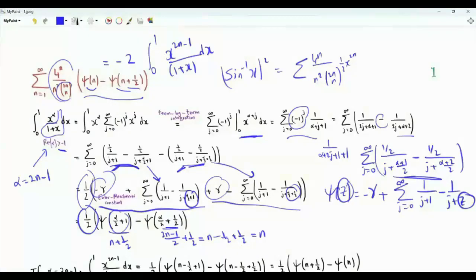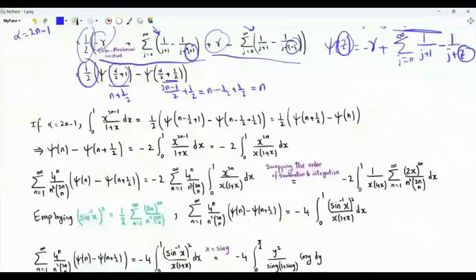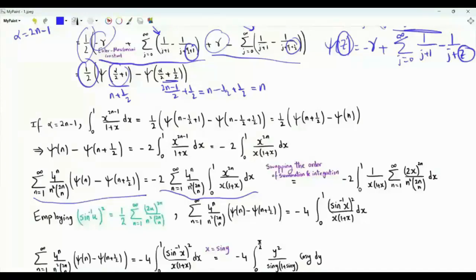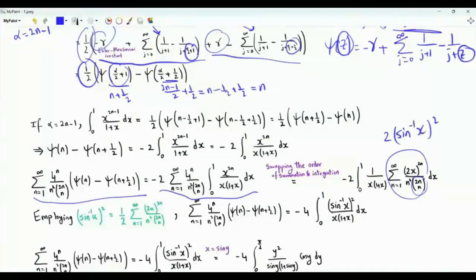We write x to the 2n in the numerator and x times 1 plus x in the denominator. The sum of interest is now expressed as a double sum. Doing the summation first, we have sum n from 1 to infinity of 2x to the 2n over n squared times the binomial 2n choose n, which equals 2 times the square of arcsin x. So our sum becomes minus 4 times the integral from 0 to 1 of arcsin²(x) divided by x times (1 plus x).